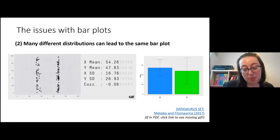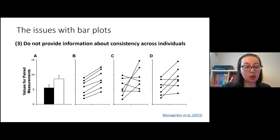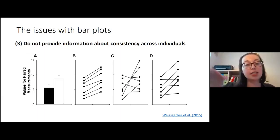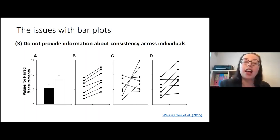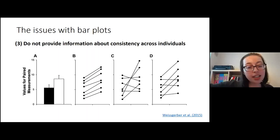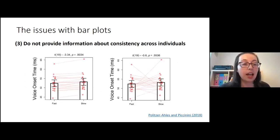The third issue with bar plots is that they do not provide information about consistency across individuals. Looking at a bar plot showing a big condition difference, we tend to assume — in a within-participant design — that all participants show the same direction of effect at a similar magnitude. But in fact, there could be a lot of variance in participant effects, with very few participants driving the mean difference while others show no effect or go in the opposite direction.